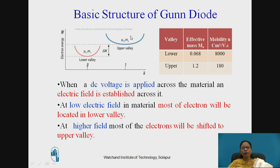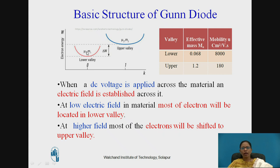In the upper valley, the effective mass is higher at 1.2, so mobility is reduced to 180 cm² per volt-second. When a DC voltage is applied across the material, an electric field is established. At low electric field, most electrons are located in the lower valley. At high field, the electrons shift to the upper valley, and at sufficiently high field all electrons transfer to the upper valley.